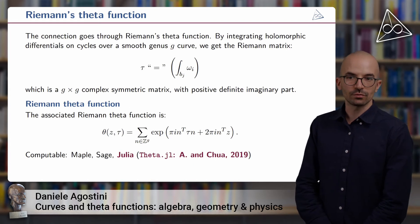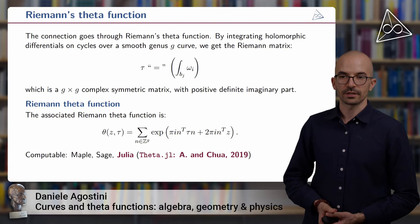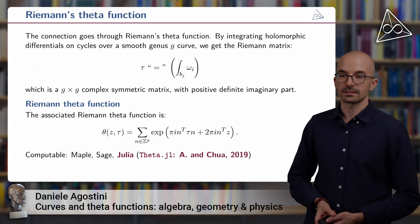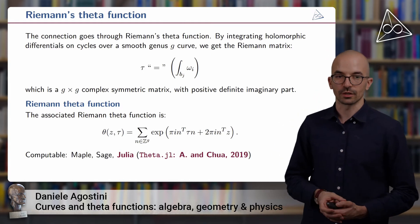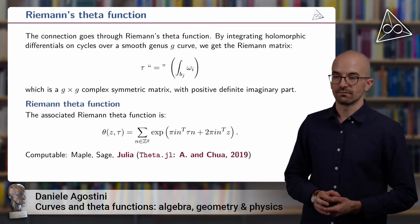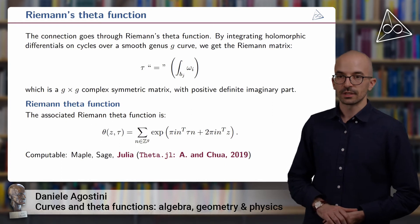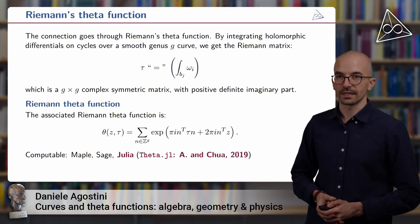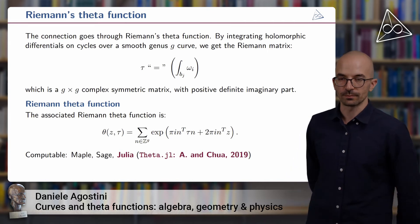For example, one point of view that may be different from the algebraic one on this object is that it is a discrete analog of the Gaussian curve. This has many important properties. One of them is that its convergence is very fast, so it can be computed effectively on a computer. There are various computer algebra systems that are able to do that. For example, you can do that in Maple, in Sage, and most recently in Julia, thanks to a software package called theta.jl, that was developed by Lynn Chua and myself while I was a postdoc here at the Institute, and Lynn was a visiting PhD student from Berkeley.